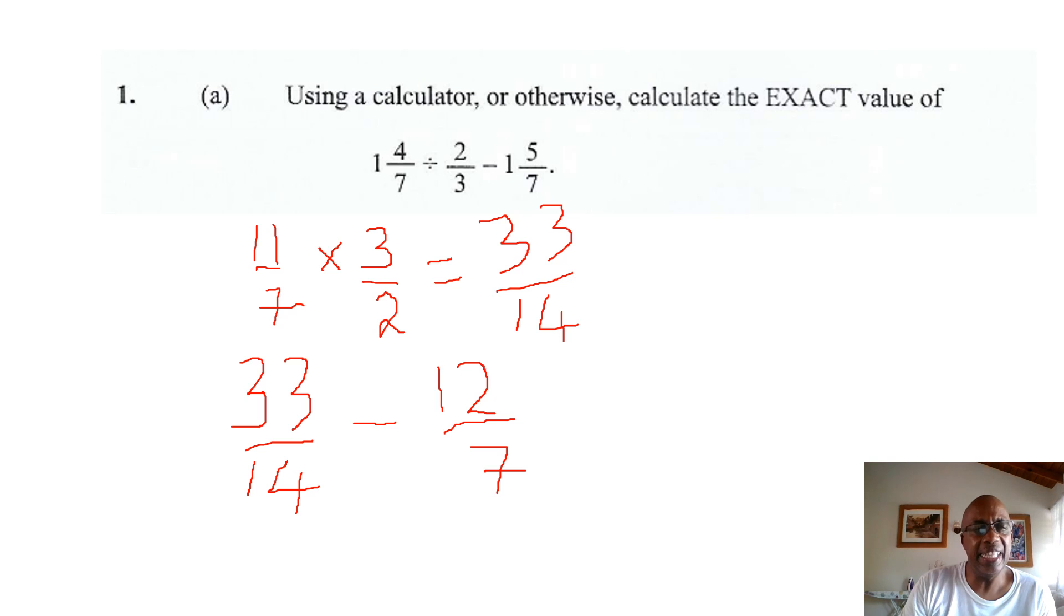To subtract, we will find the LCM. We draw a line underneath it. We find the LCM, the lowest common multiple of 7 and 14, which is 14. Remember, the lowest common multiple is the lowest number both 7 and 14 can be divided into. So, what we are doing, we are bringing both fractions here to the same common denominator, 14.